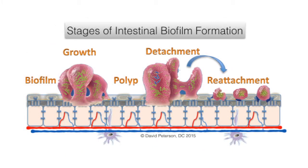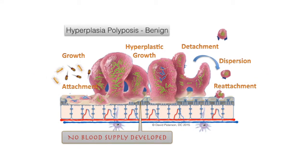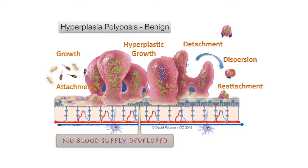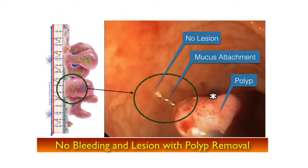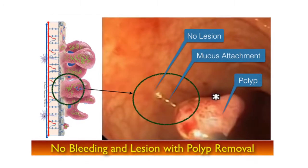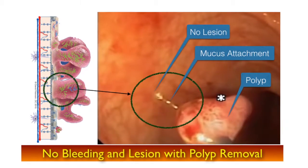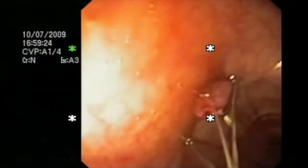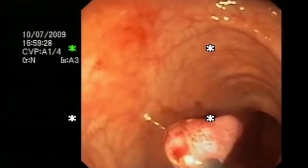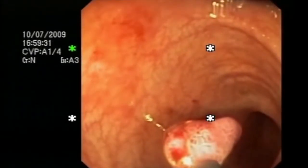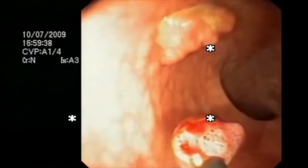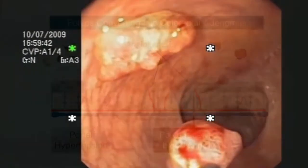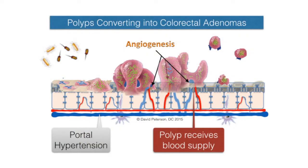Bacterial biofilm polyp formation repeats this process throughout the entire gastrointestinal tract — from the mouth and nasal passages to the vocal cords, through the stomach, the small intestine, and the large intestine. If they remain attached just to the surface of the mucosal lining, they are usually considered benign. You can see in this video clip the polyp being plucked from the mucosal lining with no bleeding. The bacteria in a second polyp visible nearby have been there long enough to access the blood supply through the intestinal lining.